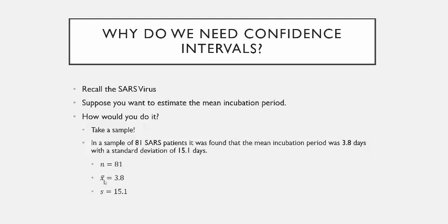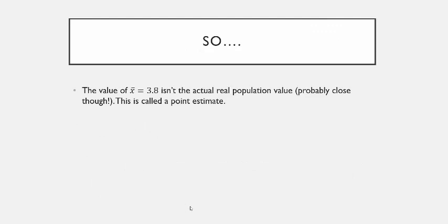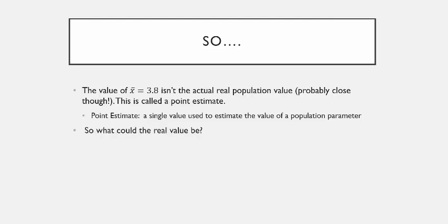The sample size was 81, the sample mean from these 81 SARS patients was 3.8 days, and the sample standard deviation was 15.1 days. The value of x̄ = 3.8 isn't actually the real population value — the mean incubation period of SARS is not exactly 3.8 days. This is what is called a point estimate: a single value used to estimate the value of a population parameter.